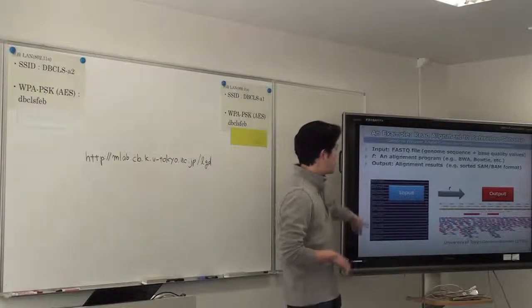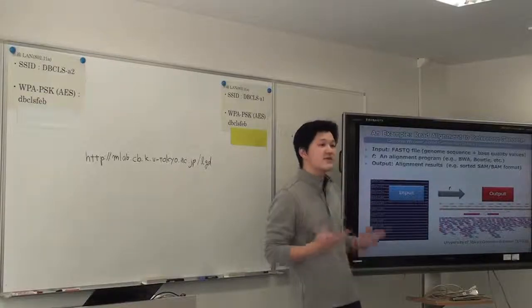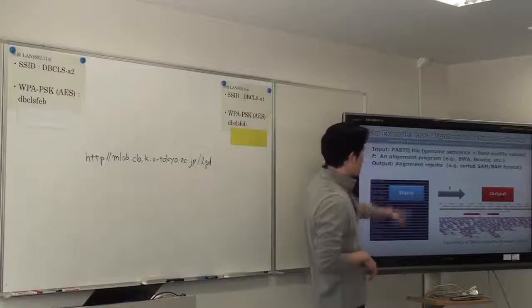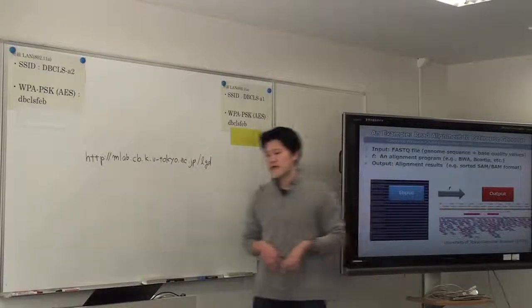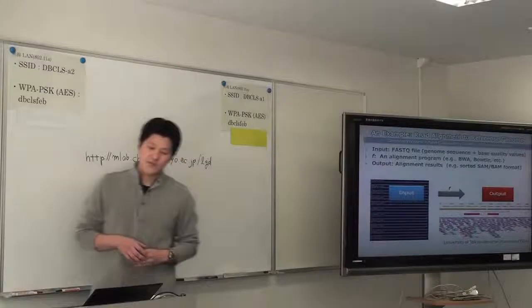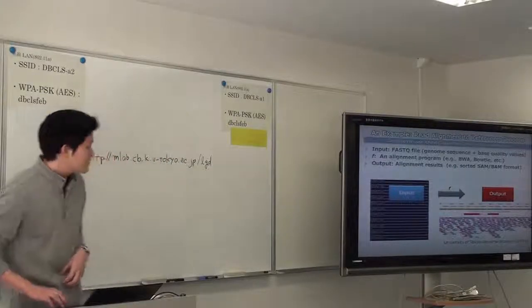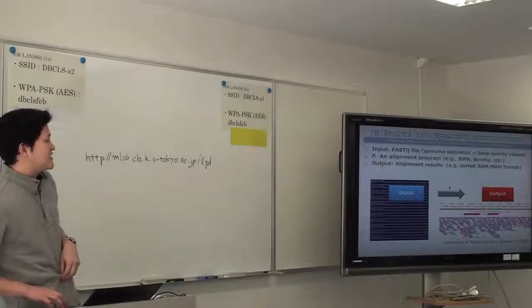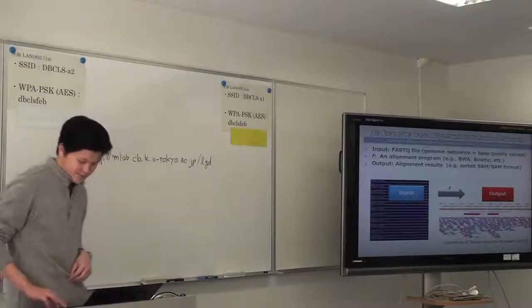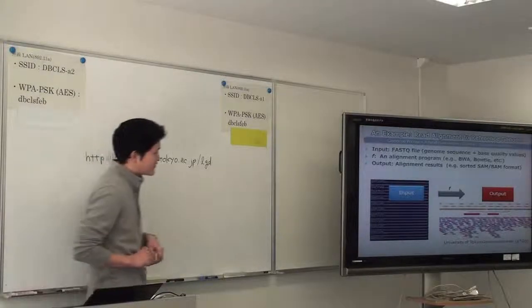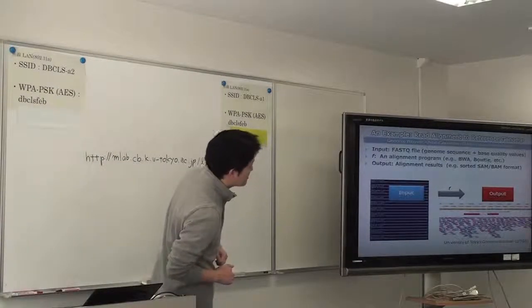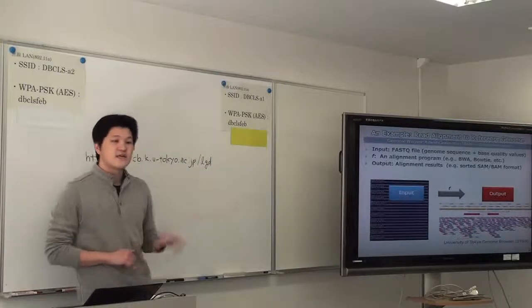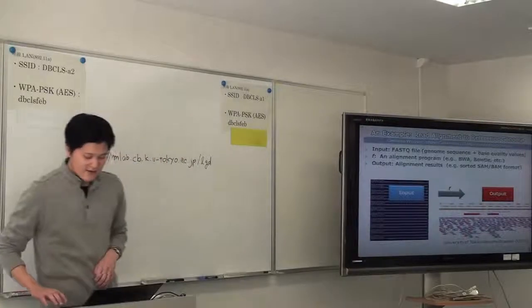So, yeah, we have FASTQ. It's just a text format which contains the sequence and the base quality values. And they are putting this alignment information to which chromosome, to which position the reads data obtained by the next generation sequencers aligned. This screenshot is generated by UTGB, University of Tokyo Genome Browser, developed in our laboratory.